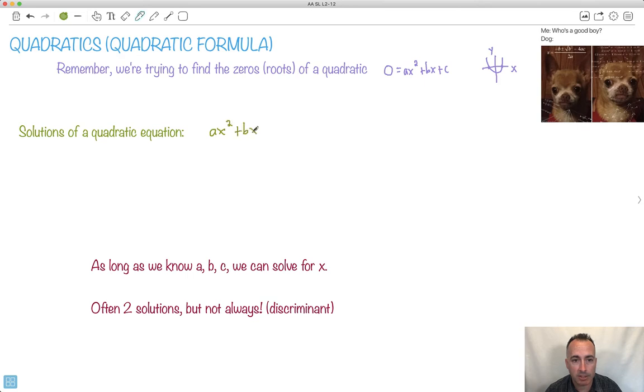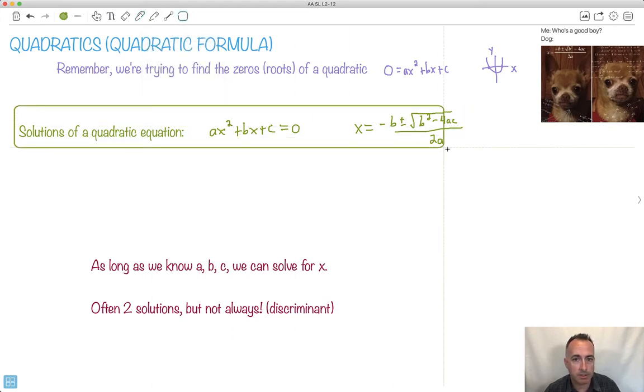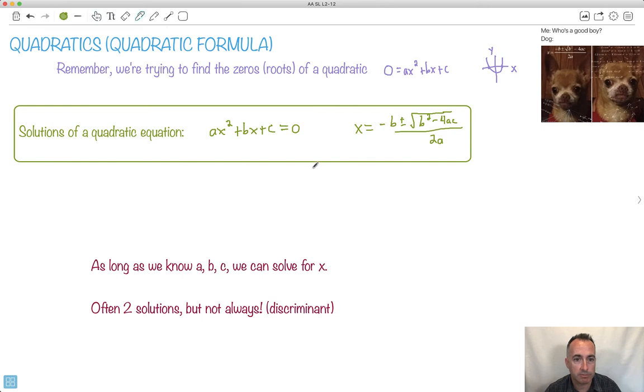So we have the solutions for the quadratic equation. This is actually in your formula book, which is kind of nice. They write it as a generic quadratic: x squared plus bx plus c equals zero. The solution is x equals minus b plus or minus the square root of b squared minus 4ac, all that over 2a.